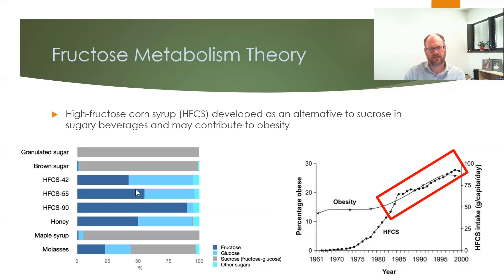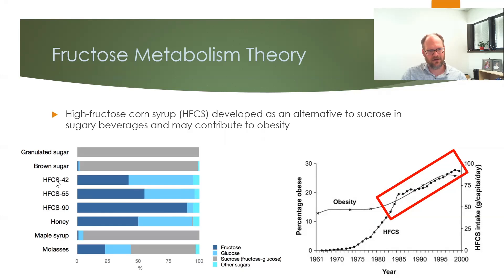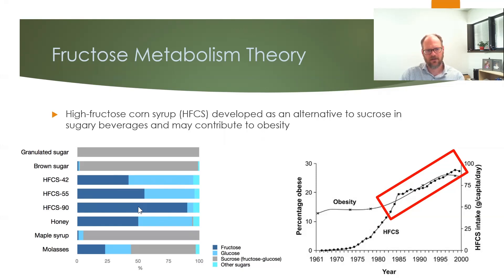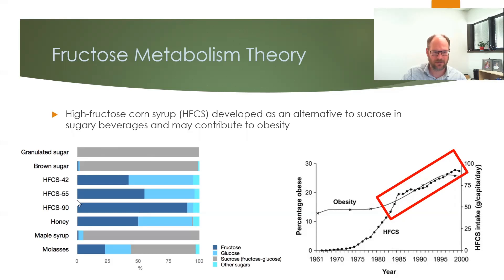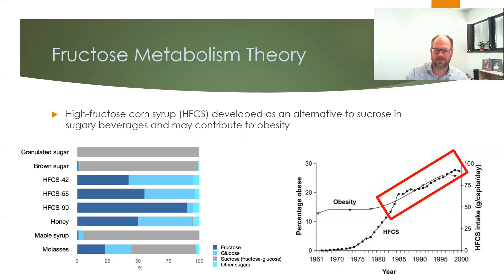High fructose corn syrup is not just one product — it's a range of products with different fructose compositions. HFCS 90 is about 90% fructose, while HFCS 42 has only 42% fructose. In general, these high fructose corn syrups have considerably more fructose than naturally occurring fruit sources. Table sugar, sucrose, is a 50-50 mixture of glucose and fructose as a disaccharide. Brown sugar is very similar, and honey does have a fair amount of fructose but not as much as high fructose corn syrup.